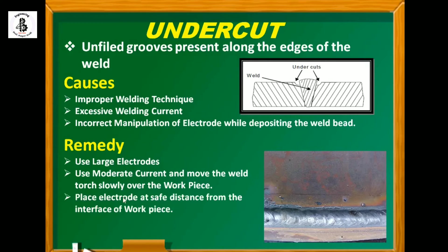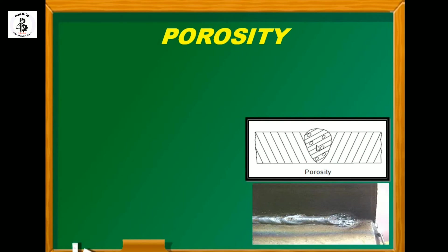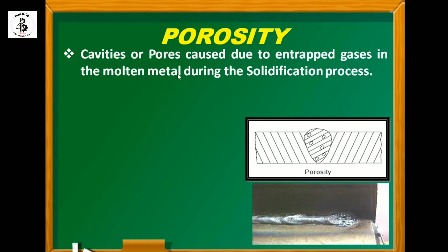The second defect is porosity. Such defects are found in the welding process — you can see air bubbles present in the weld zone, creating porous material. This is considered an imperfection in welding. The cavities or porous areas are caused by the entrapment of gases in the molten metal during solidification, and this commonly occurs in fusion welding processes.